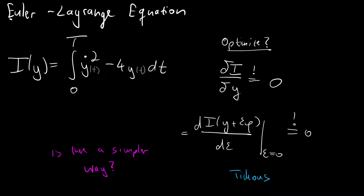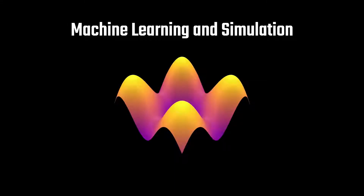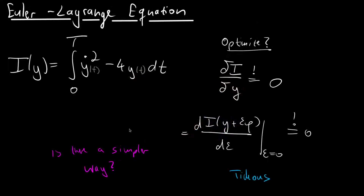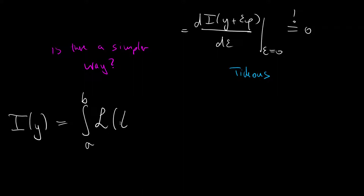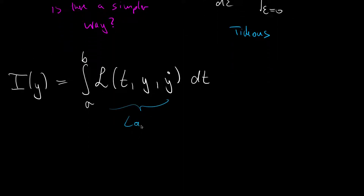In this video we will derive the Euler-Lagrange equation. Let us start by defining a more general functional. The functional I of the function y is given as the integral from a to b over a function L — called the Lagrangian — that depends on t, y, and y', integrated over t.